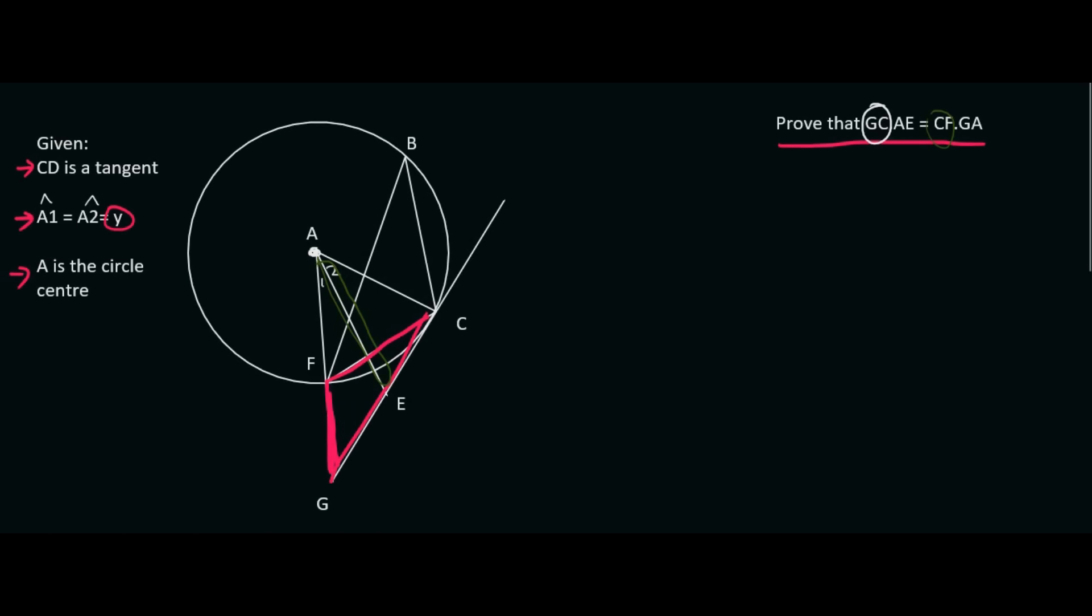And then I just look at the last one, which is GA. Now, GA is this whole piece over here. So it's quite easy to see which two triangles we're going to work in. It's going to be this one and this one.